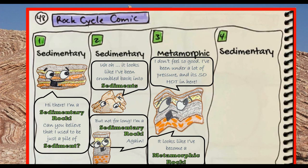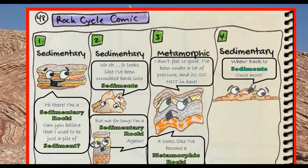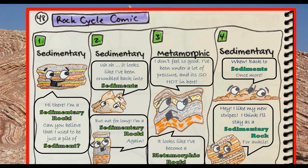Metamorphic rocks still look like the original rock type — they've just been squished out of shape. Then he's got to turn back into a sedimentary rock again, crumbled up into sediments, and finally one last sedimentary rock and he is done.